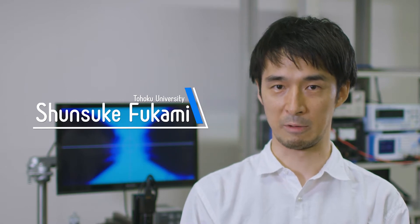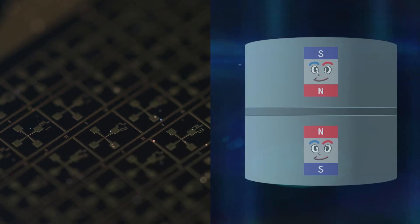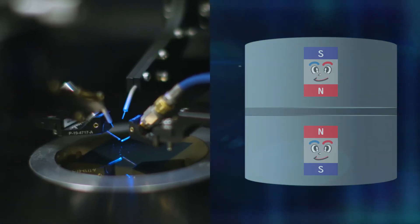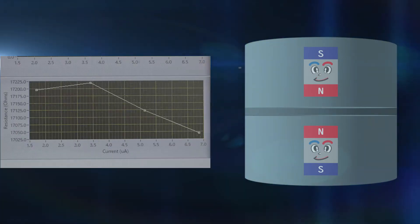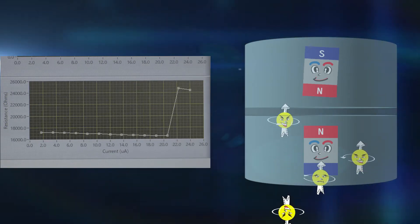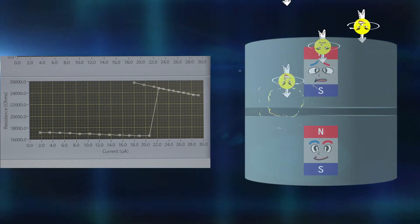Let me show the experiment. Here is our magnetic devices and we apply an electric current now. You can see an abrupt resistance switching, which means that the device magnetization has reversed.